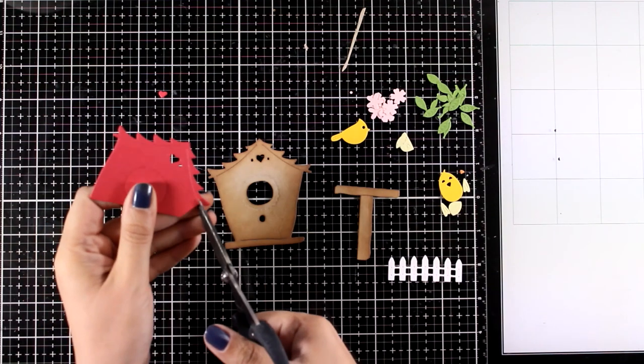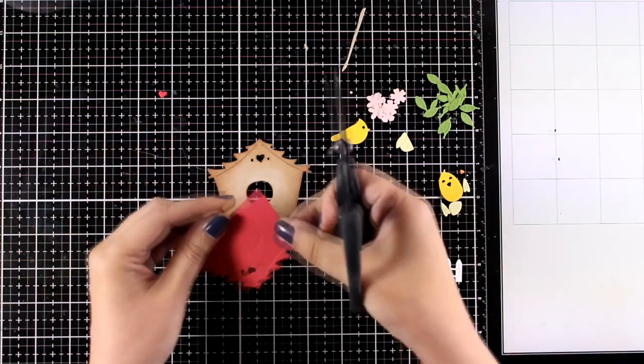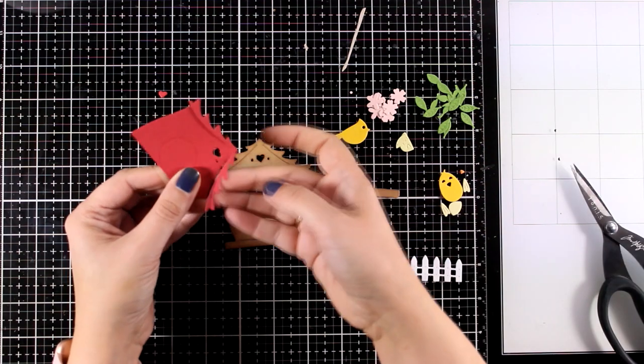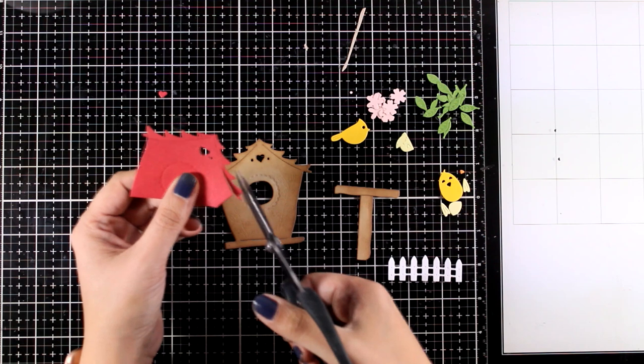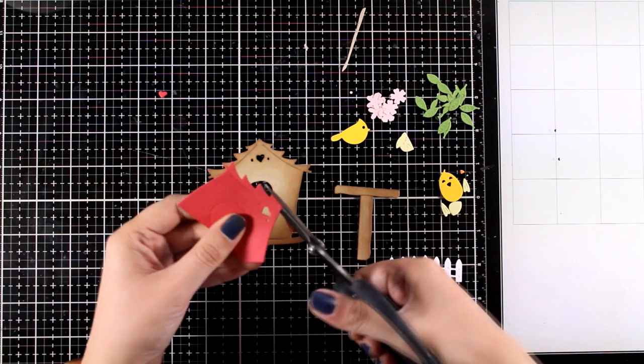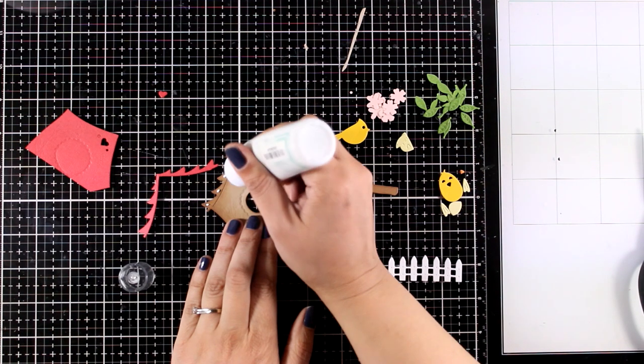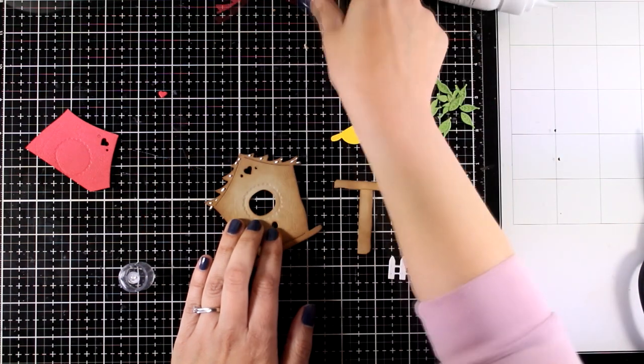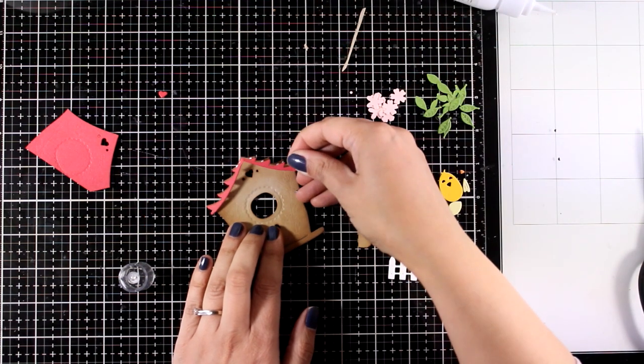Now I will work on the roof. For the roof I'm going to cut out the top from the red cardstock and it is designed in such a way so that you can easily separate it. Then you can stick it on top of your main bird house either by using your glue or by using some foam tape at the back to make it pop a little bit if you want to. For my design today I'm just going to stick it down with glue.